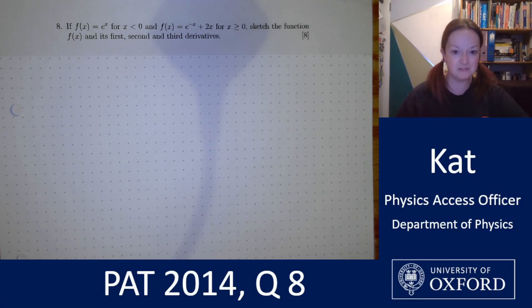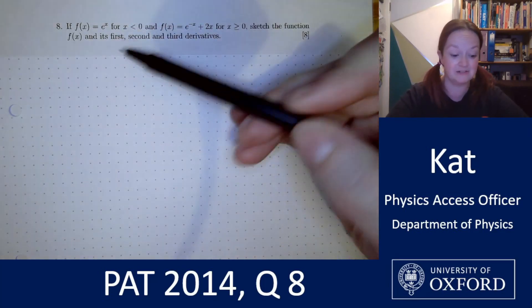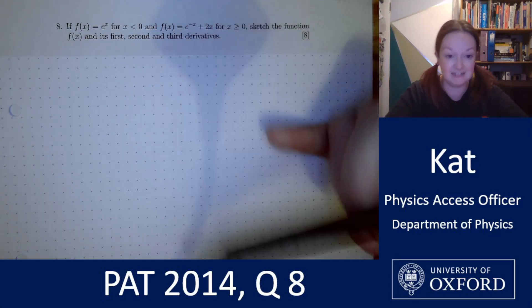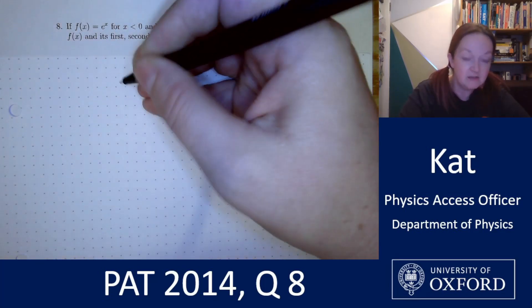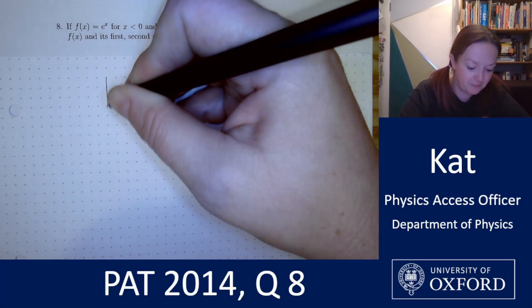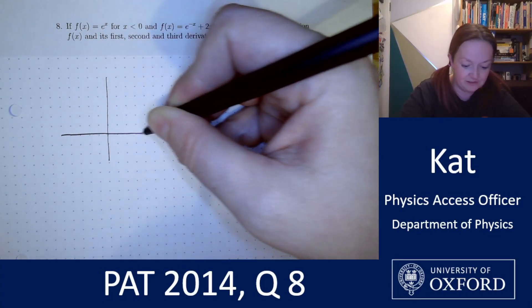Personally I would start with a couple of reminder sketches because I can see from this question that I'm at the very least going to need to sketch e to the x and e to the negative x, and I can take a guess from the fact that this involves derivatives I'm going to need some related shapes and functions. So I would start just by reminding myself what these look like and having a few things in point.